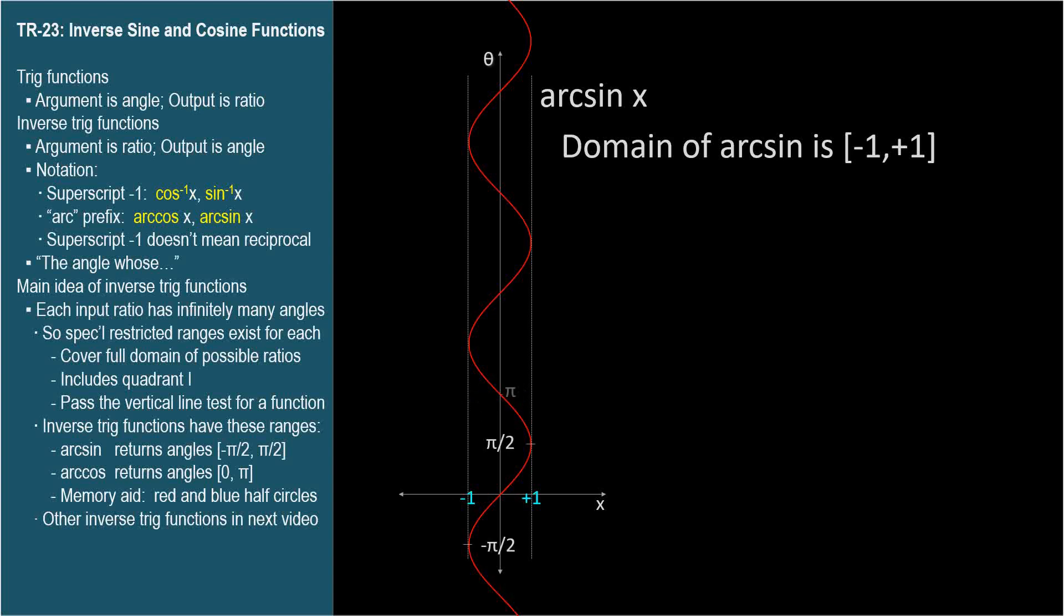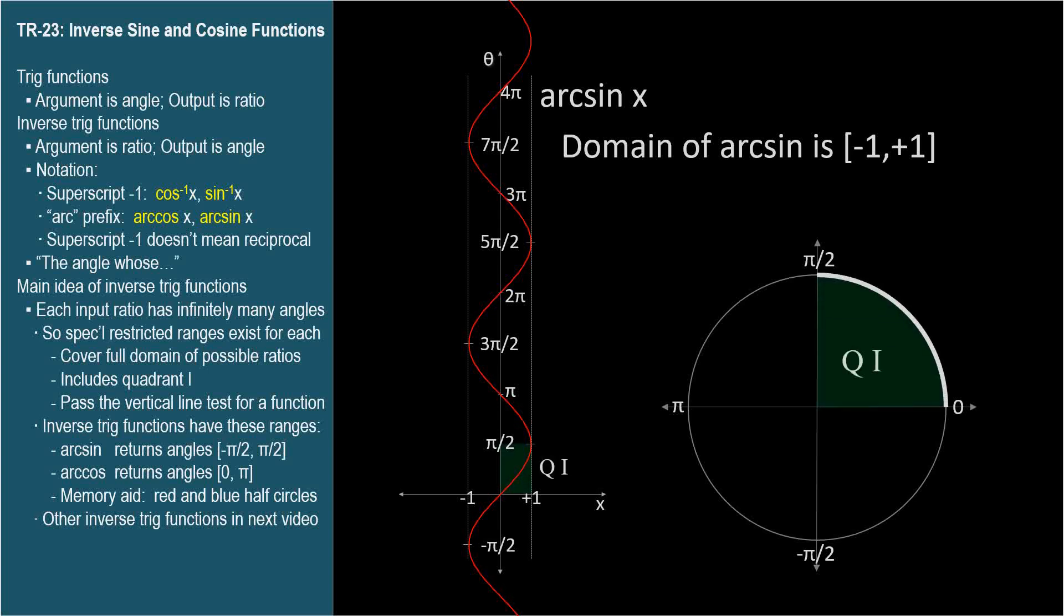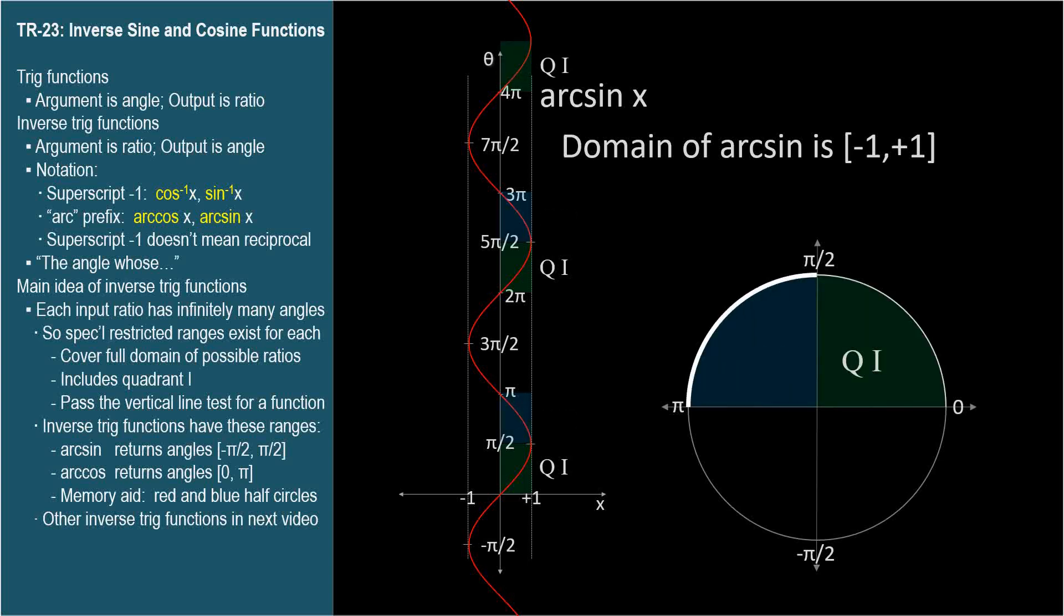Here are some quadrantal angle labels. Inverse trig graphs have theta as the vertical axis since the angle is the dependent variable. Here's a circle with the quadrants labeled and shaded. Quadrant 1 corresponds to this part of the arc sine curve with angle between 0 and pi over 2 radians. It also represents these larger angles that terminate in quadrant 1. Quadrant 2 angles are shown here. Of course the pattern continues up and down the vertical axis.